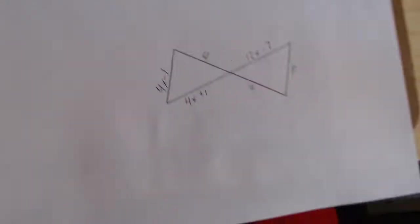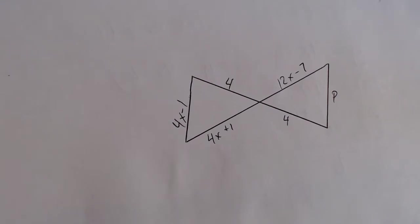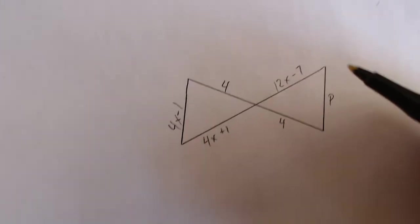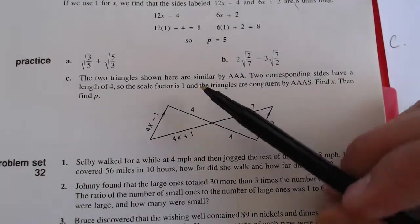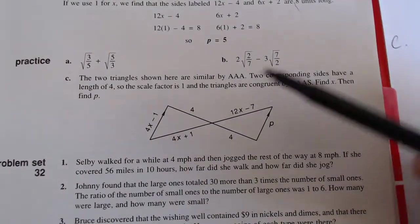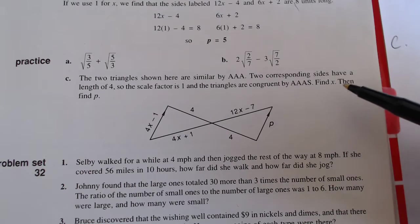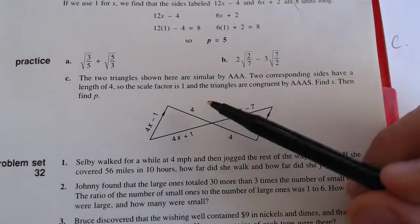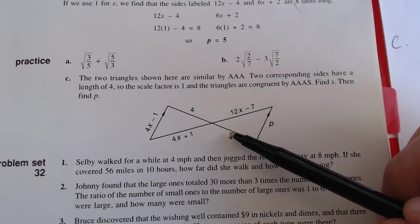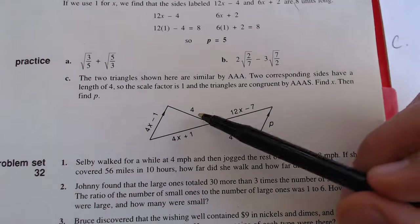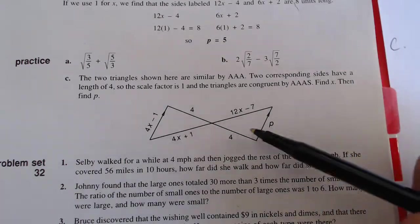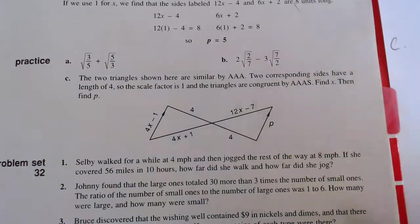Moving on to practice C. This is where we're going to start using our congruent triangles. So they give us this figure, and then they tell us that these two triangles are similar by equal angles. And then they also tell us that two corresponding sides have a length of 4. So the scale factor is 1, and the triangles are now congruent by angle, angle, angle, side. So we have two congruent triangles. These are the exact same triangle. We just have to find the unknowns.